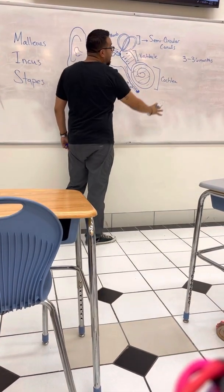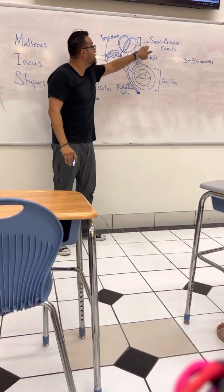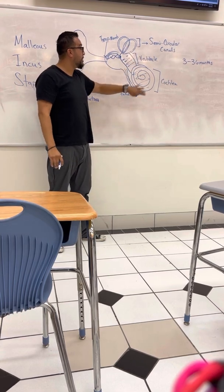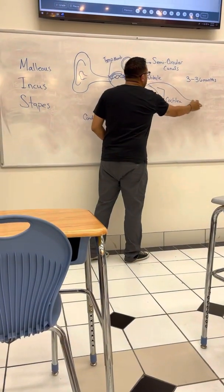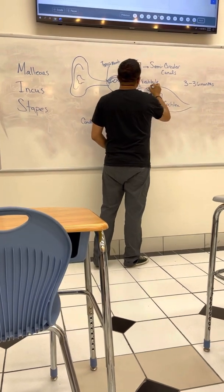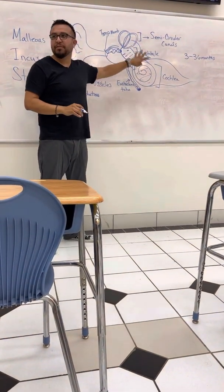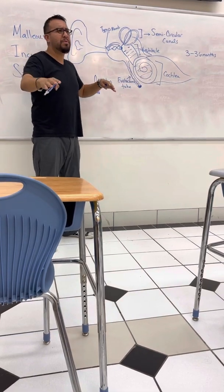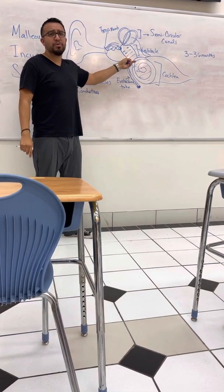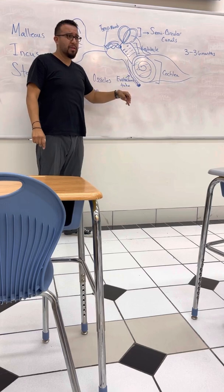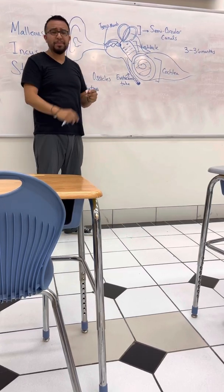Now the inner ear is very important because I discussed the semicircular canals, the vestibule, the cochlea, and then you have this branching off of these nerves. All the fluid that's inside of those chambers, you have also other components like you have the bony or the membranous labyrinth.